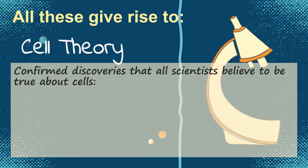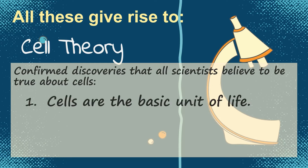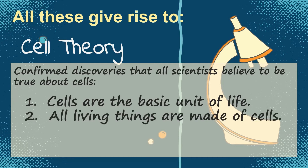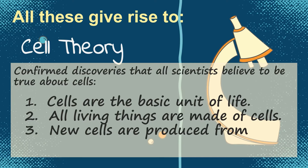All these things give rise to what we now call the cell theory. The cell theory encompasses the confirmed discoveries that all scientists believe to be true about cells. That is: 1. Cells are the basic unit of life. 2. All living things are made of cells. 3. New cells are produced from pre-existing cells.